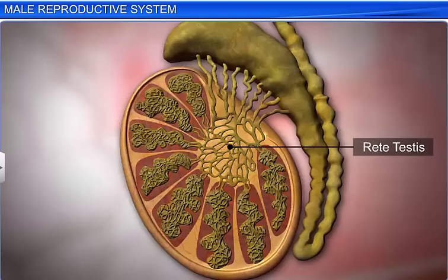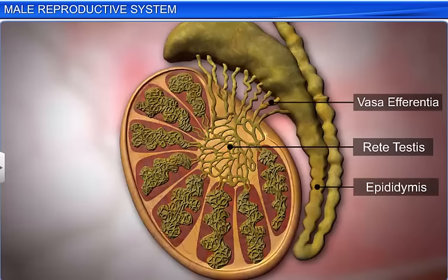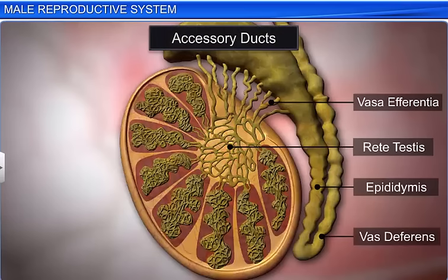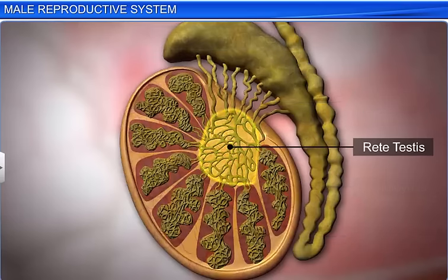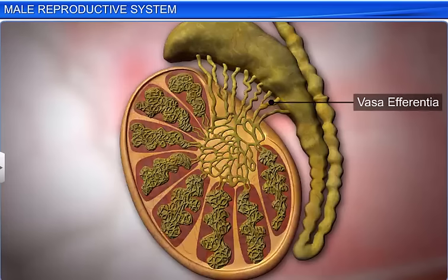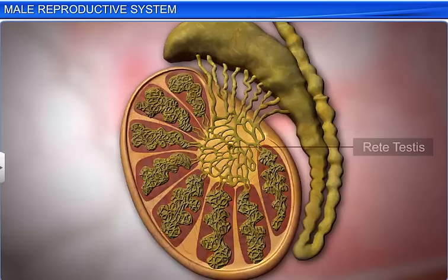Rete testis, vasa efferentia, epididymis, and vas deferens are the male accessory ducts. The rete testis is a network of ductules formed by the seminiferous tubules. Vasa efferentia are ciliated ductules that arise from the rete testis.